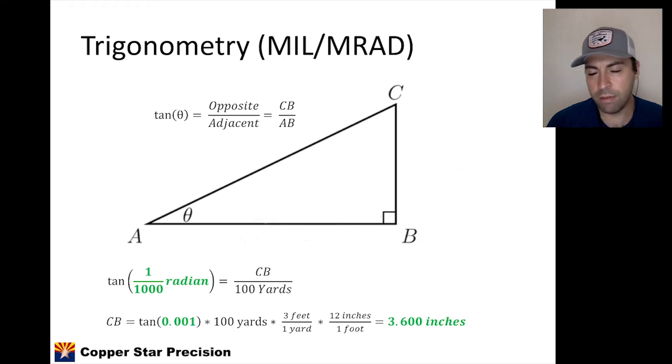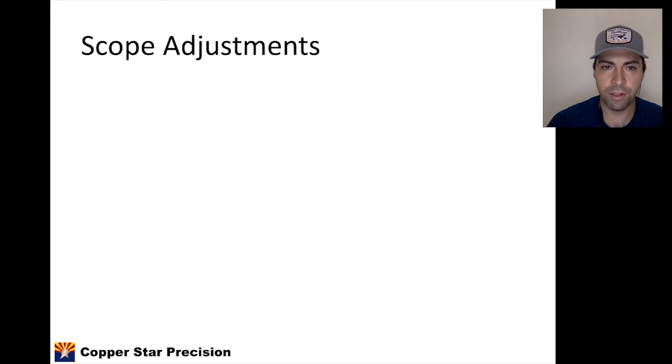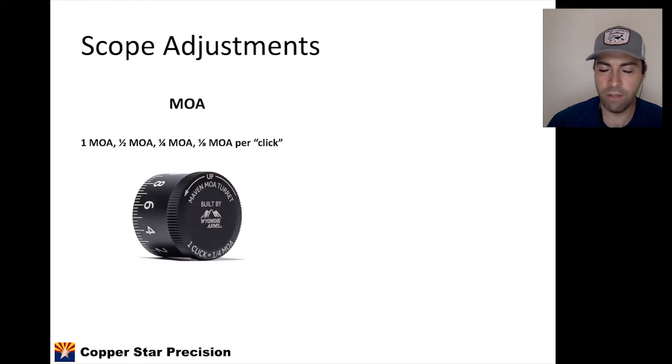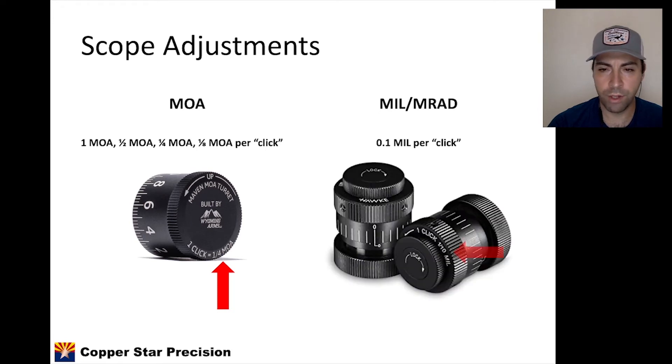Now, does that mean that MOA is better because it's a finer adjustment? Well, it has to do with what your scope is capable of. So if we look at MOA scopes, there are click adjustments. There typically can be 1 MOA, half MOA, quarter MOA, eighth MOA, per click. And what you'll know is that on your turrets, if it's your elevation or your windage turret, you'll notice that here, this turret is a quarter MOA per click. Generally speaking, on mil turrets, it's 0.1 mils per click. And I have some examples of some hawk turrets here. And you can see one click is equal to one-tenth of one mil. So what exactly does that mean?